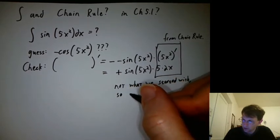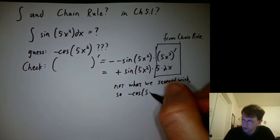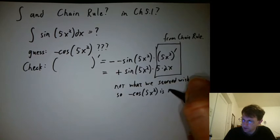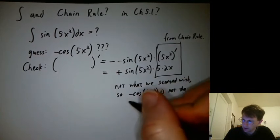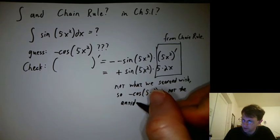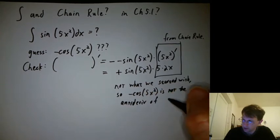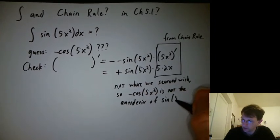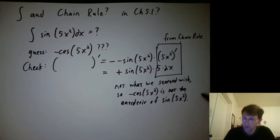So, negative cosine 5x squared is not the antiderivative of sine 5x squared. Okay, so,